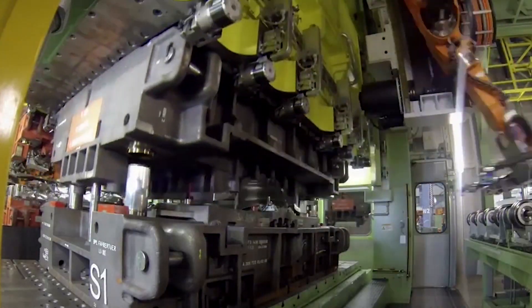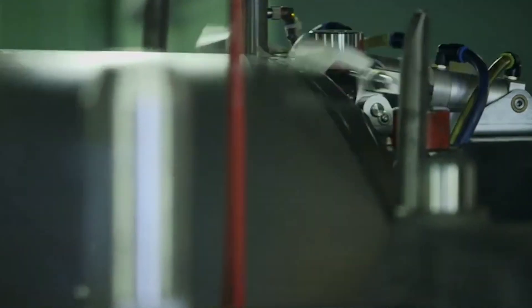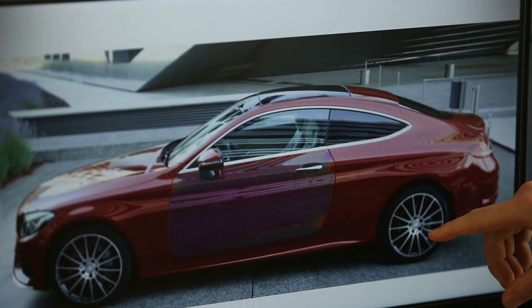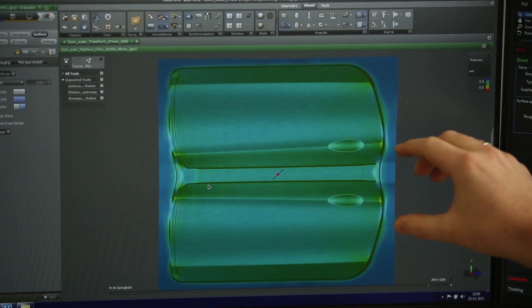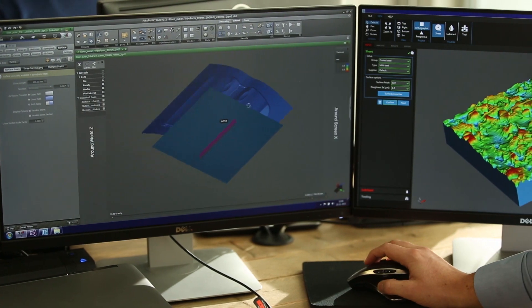Sheet metal forming is a precise process, especially in the automotive industry. To guarantee the quality of the part, the sheet metal forming process is simulated first.